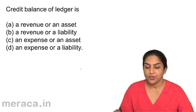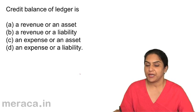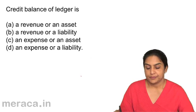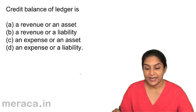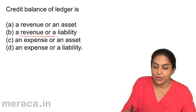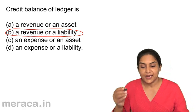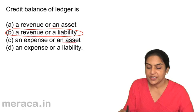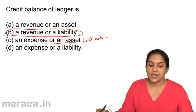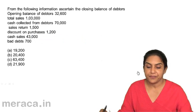Question 12: Credit balance of a ledger is — A: a revenue or an asset, B: a revenue or a liability, C: an expense or an asset, D: an expense or a liability. Credit balance is usually a liability or an income. Revenue is the same as income, and debit balance relates to assets or expenses. So the correct answer is B, a revenue or a liability.